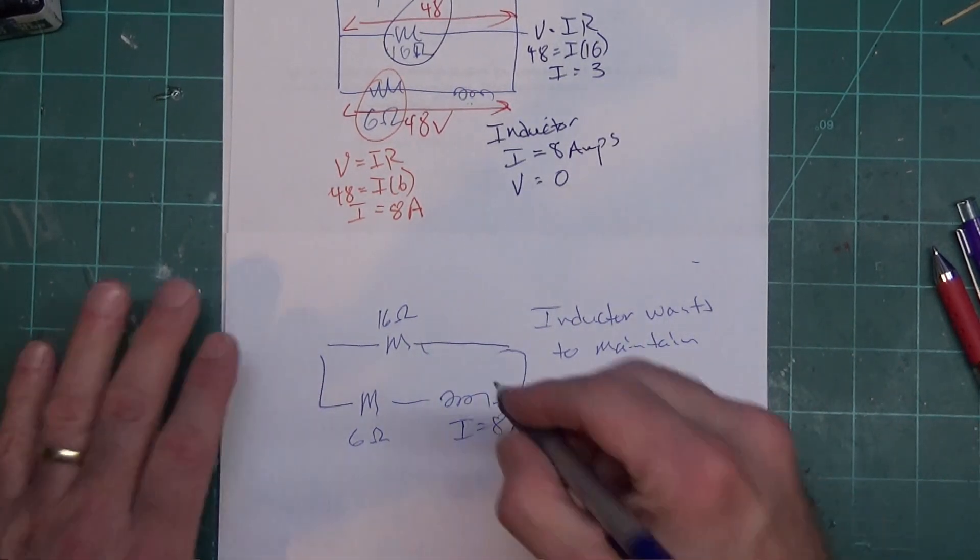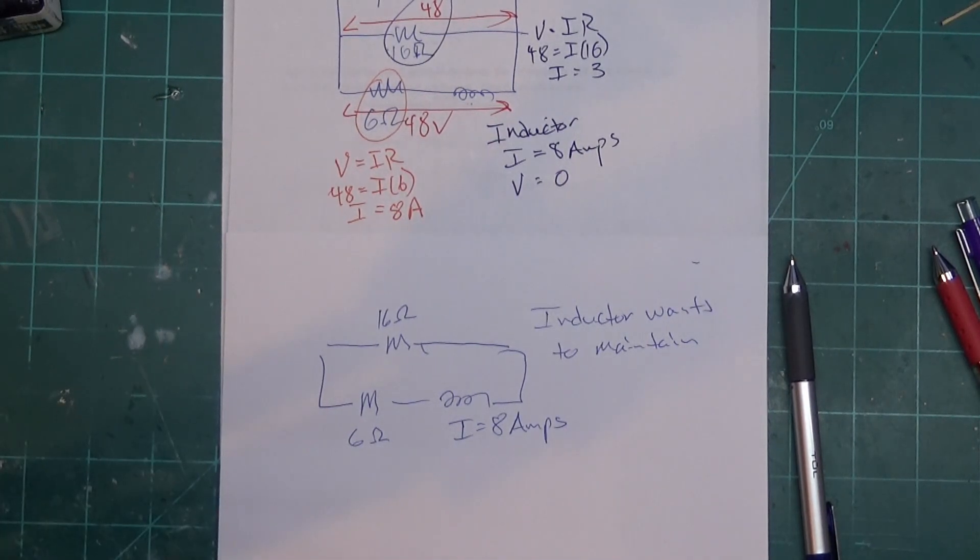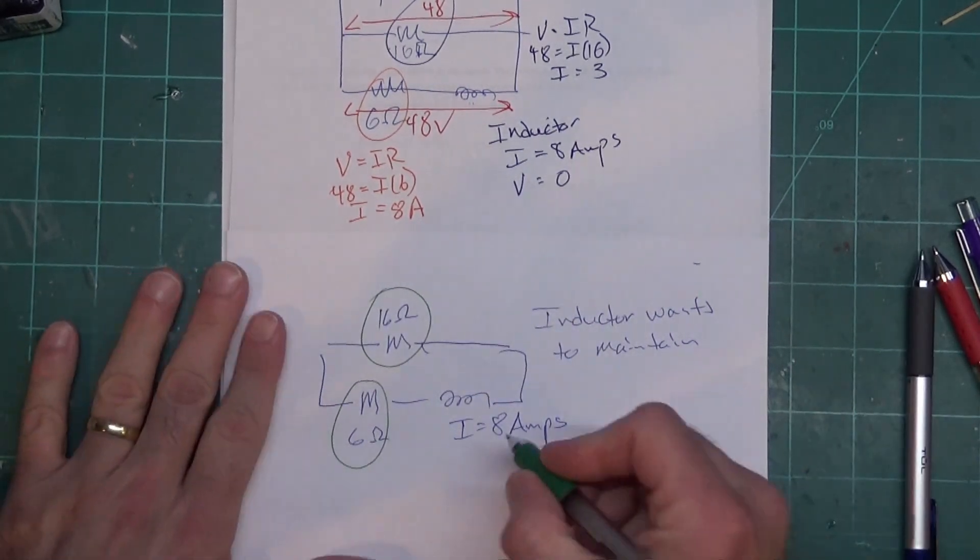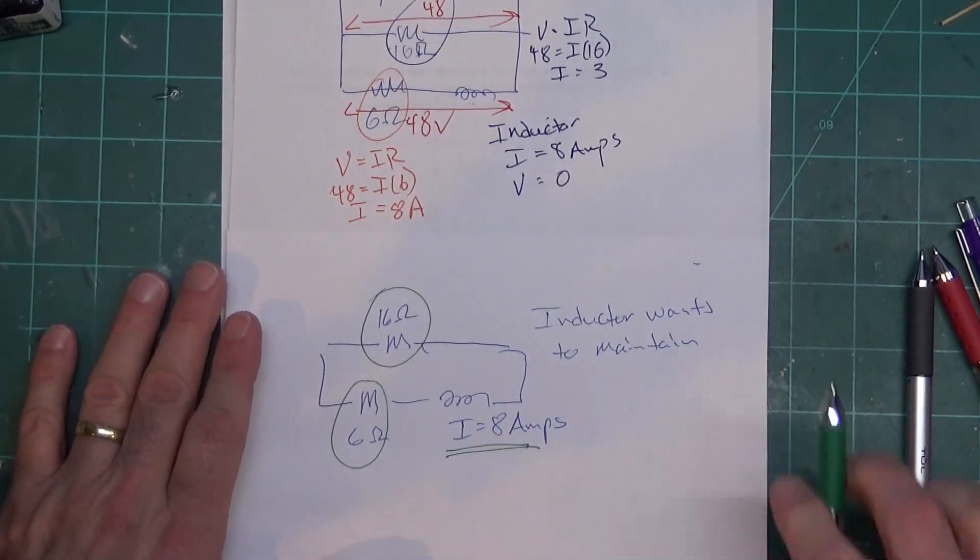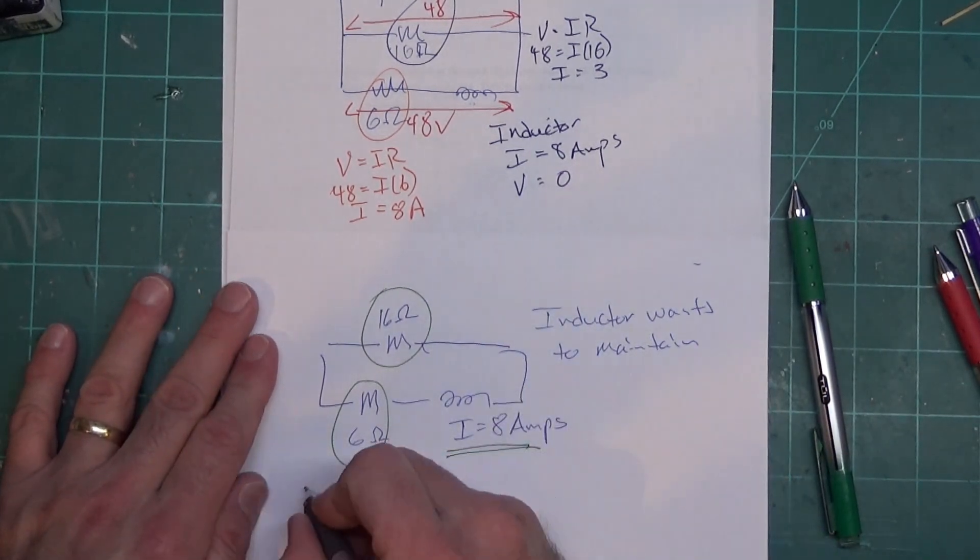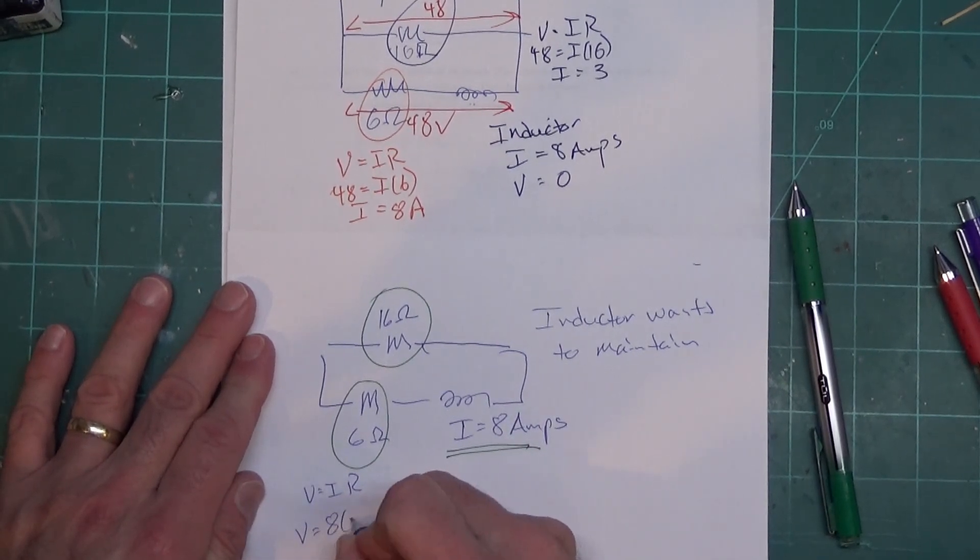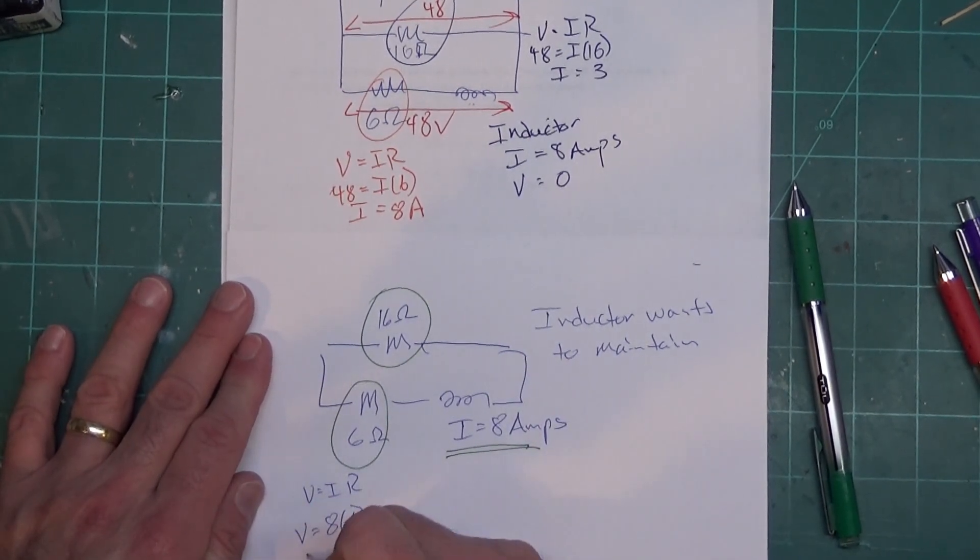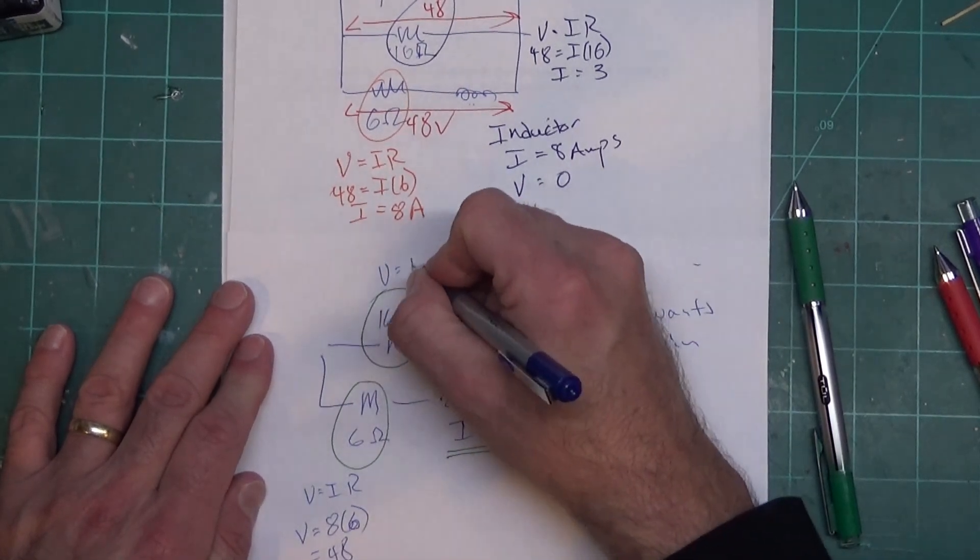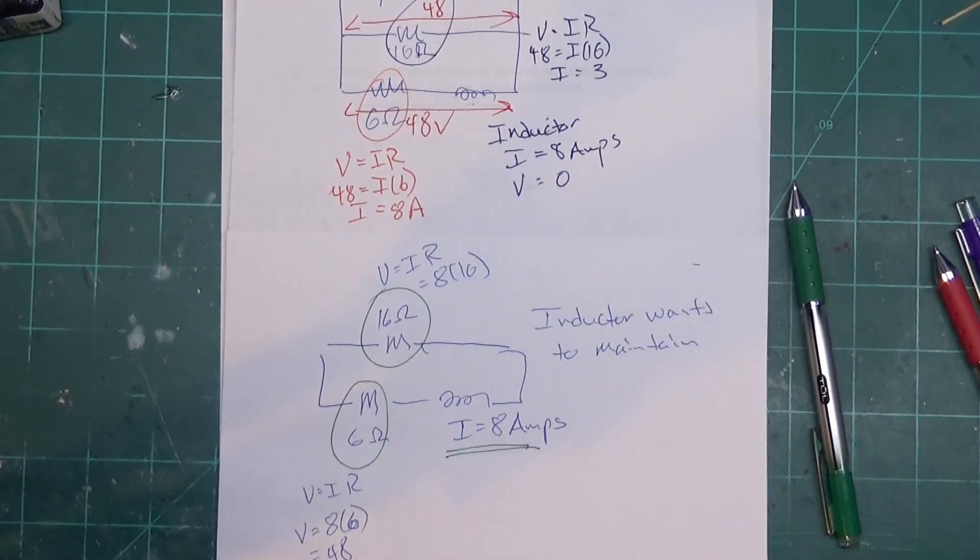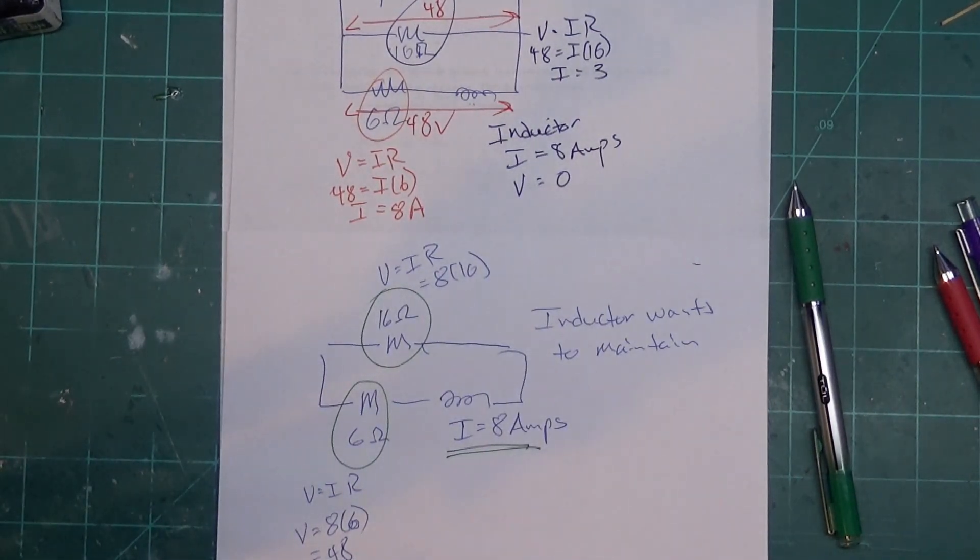So when the switch is reopened, it has 8 amps and it's trying to maintain it, so for the whole circuit we're going to do 8 amps. Now we are in series, so I can find the voltage consumed by the 6 ohm and the 16 ohm, add them, and that'll be the voltage output of this inductor. So V equals IR right here. V equals 8 times 6, so we know this voltage here comes out to 48. V equals IR equals 8 times 16, and let's see what that comes out to. Got my calculator in hand. 128.